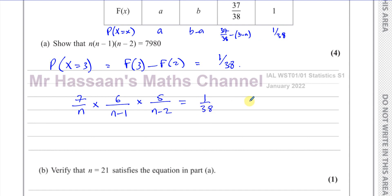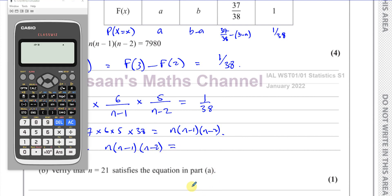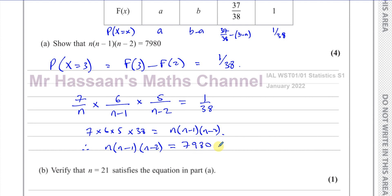So we can say 7 × 6 × 5 × 38 equals n(n−1)(n−2). That gives us 7,980. So we have shown that n(n−1)(n−2) = 7,980.